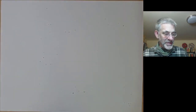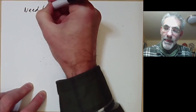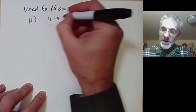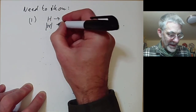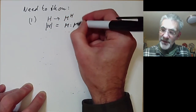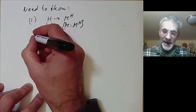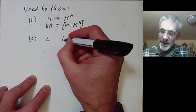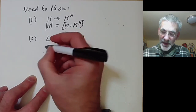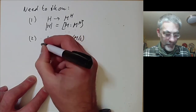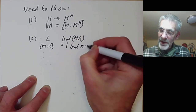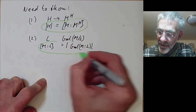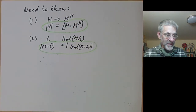So to summarise, what we have to show to prove the fundamental theorem is two equalities. First, if we go from H to M^H, we need to show the order of H equals the index of M^H in M. And the second thing is that if we go from L to the Galois group of M over L, we need to show the size of L equals the order of the Galois group of M over L. These are the two things we have to prove.